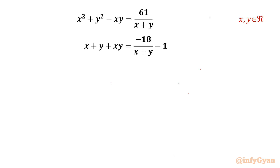Welcome back to Infigyan friends. In this video we are going to take up one very interesting system of equations. The equations are x squared plus y squared minus xy equal to 61 over x plus y, and x plus y plus xy equal to negative 18 over x plus y minus 1. We have to find out all real solutions.